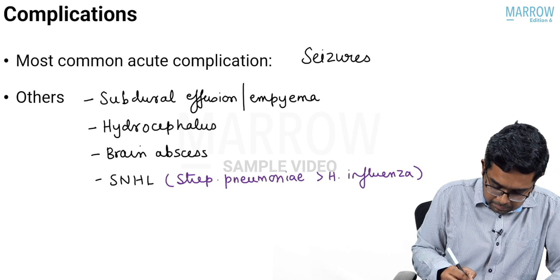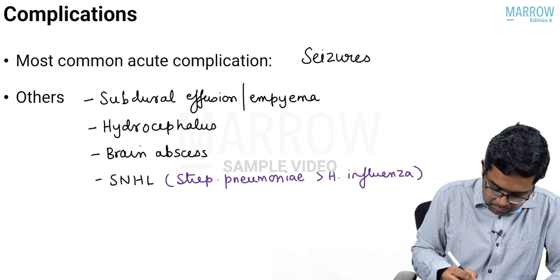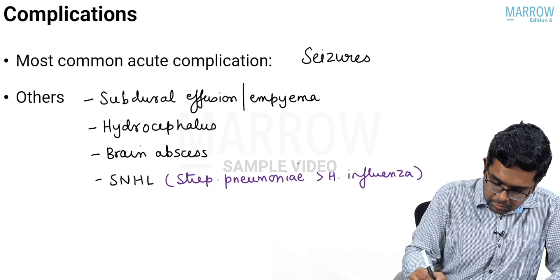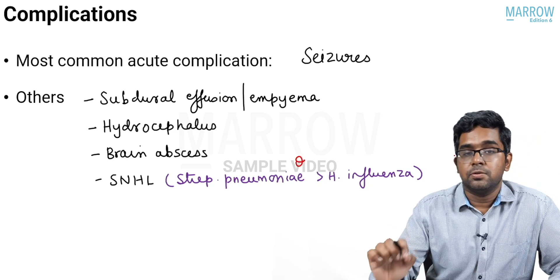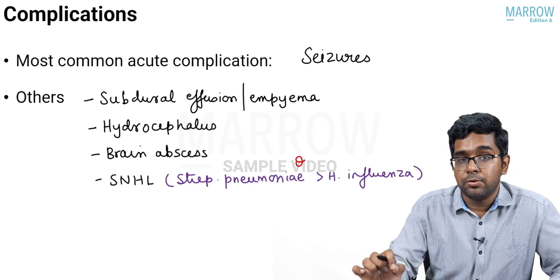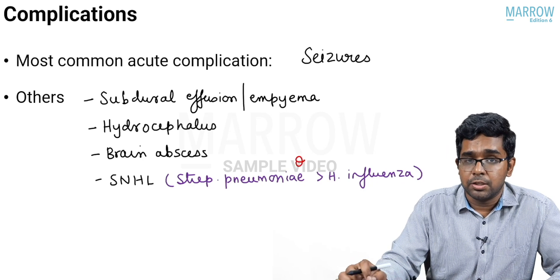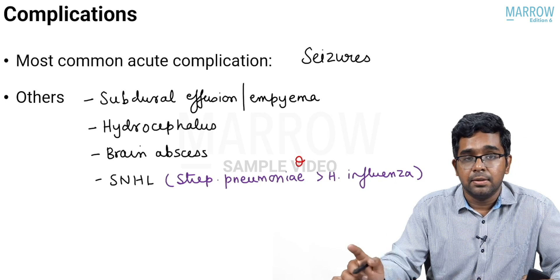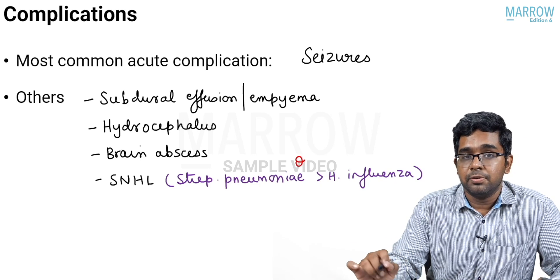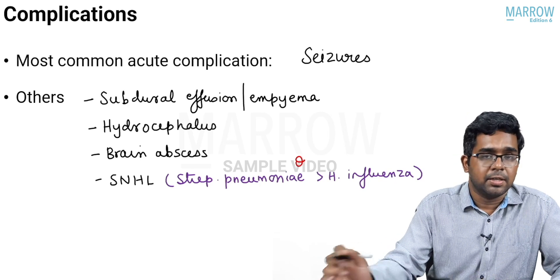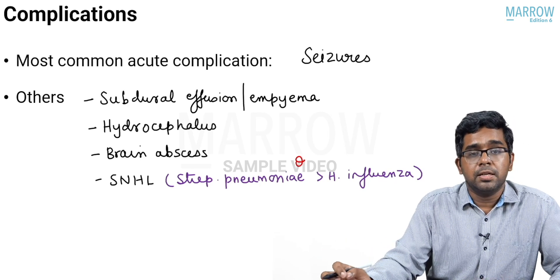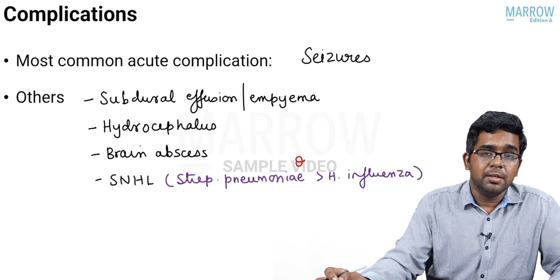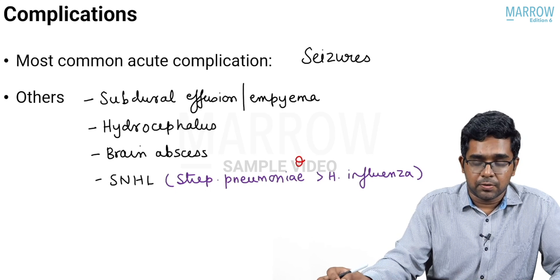This is an MCQ question: which bacteria is commonly associated with sensorineural hearing loss as a complication? It is Streptococcus pneumoniae. If that is not an option, then choose Haemophilus influenzae type B.